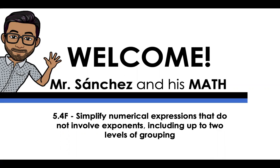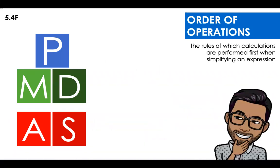These levels of groupings are brackets and parentheses if you have them in the same operation. First of all, what are order of operations? These are the rules of which calculations are performed first when simplifying expressions.